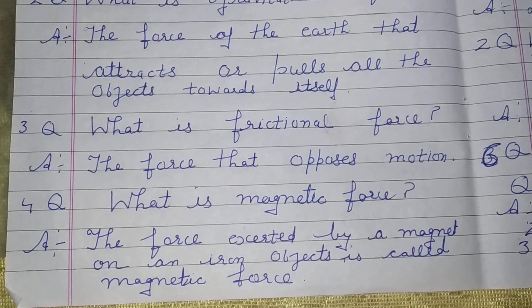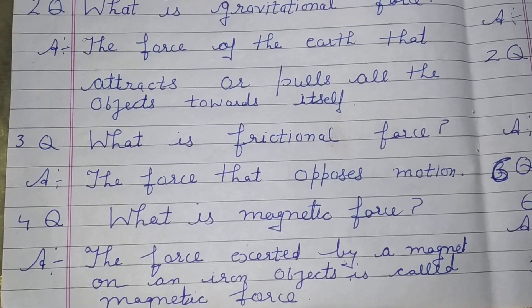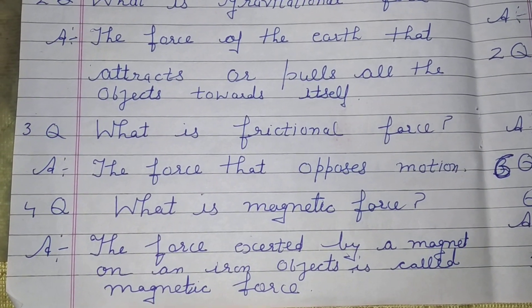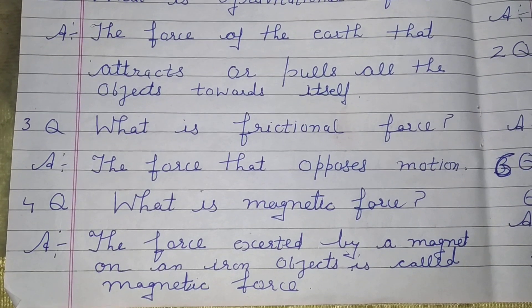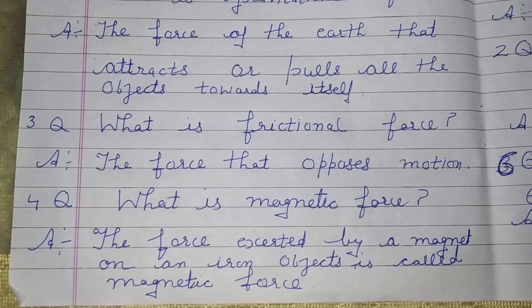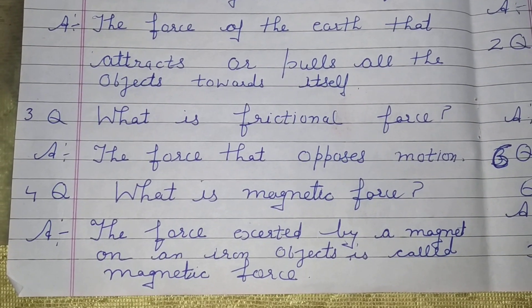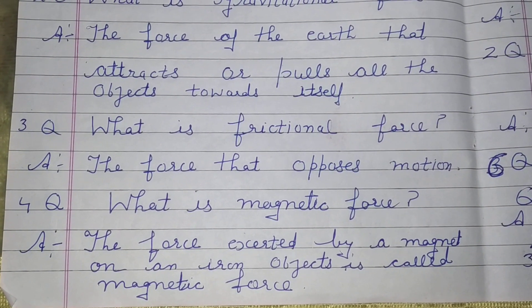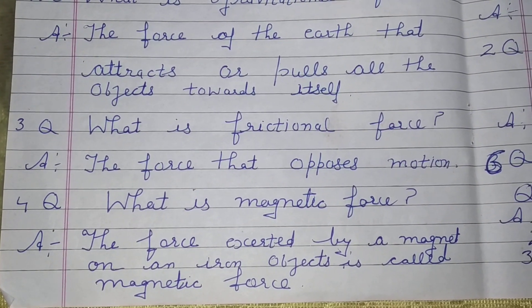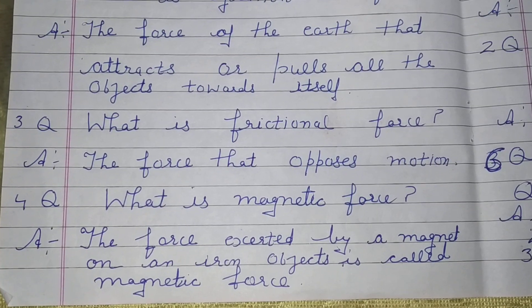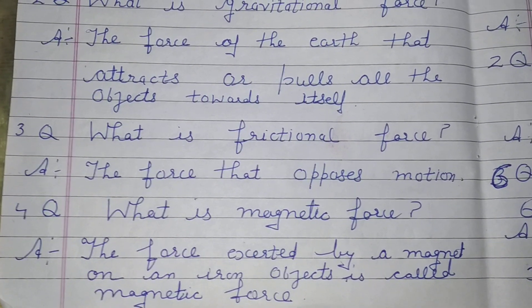Question number 4: What is magnetic force? Answer — The force exerted by a magnet on an iron object is called magnetic force.